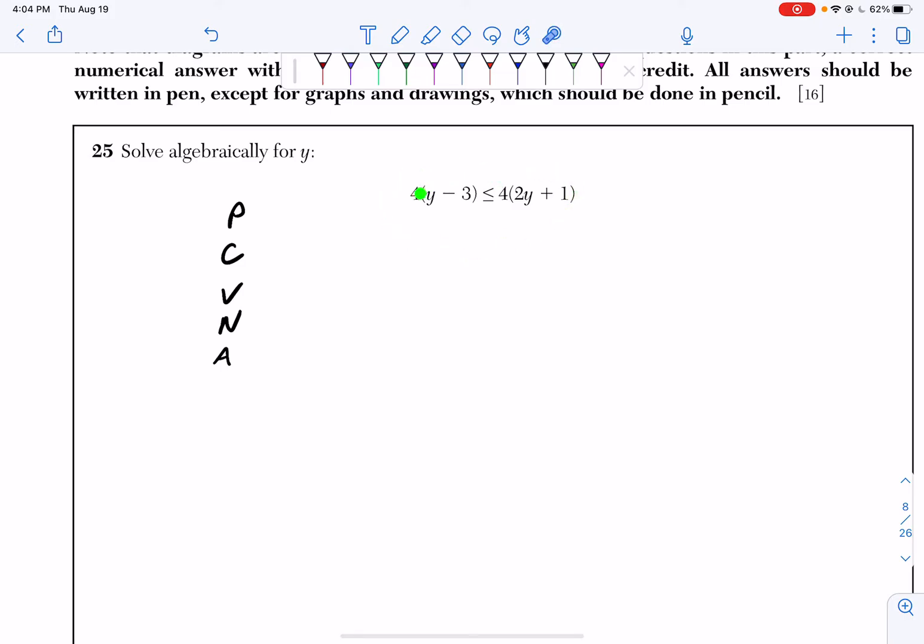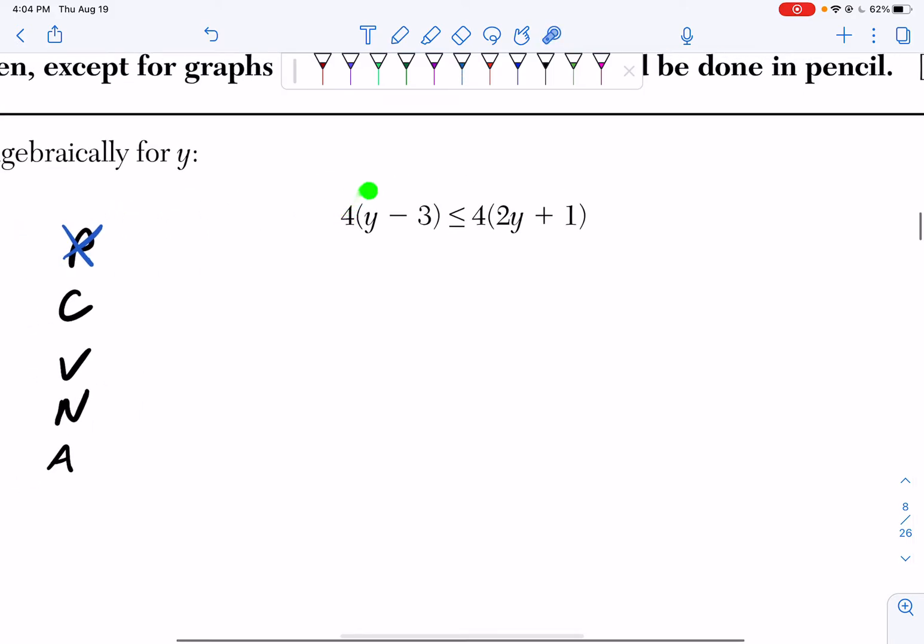So if I look at this example right here, I do have parentheses, so let's get rid of them by distributing. I'm going to distribute my 4 to y minus 3 and my 4 to 2y plus 1.